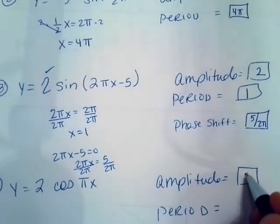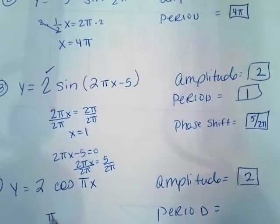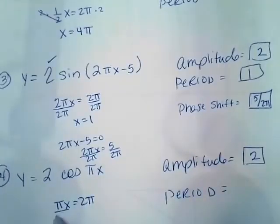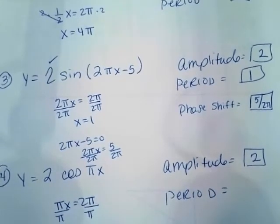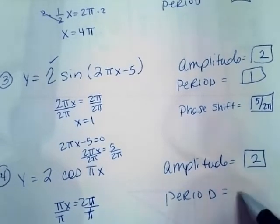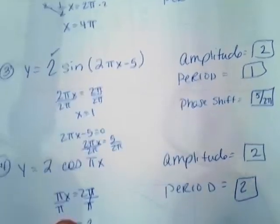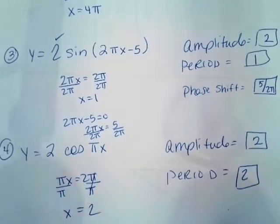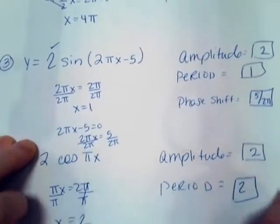This one has an amplitude of 2. π x equals 2π to find the period. Divide by π, x equals 2. Okay, so that's period and phase shift. Make you some notes so that when you get ready to take that test, you've got that handy. Those are not difficult. Make sure you get those easy ones.